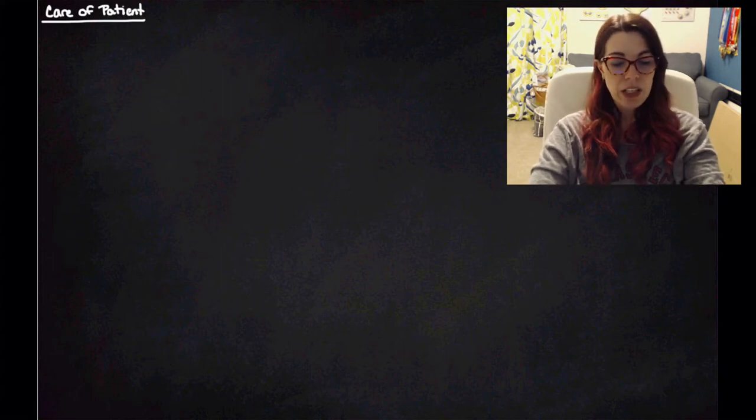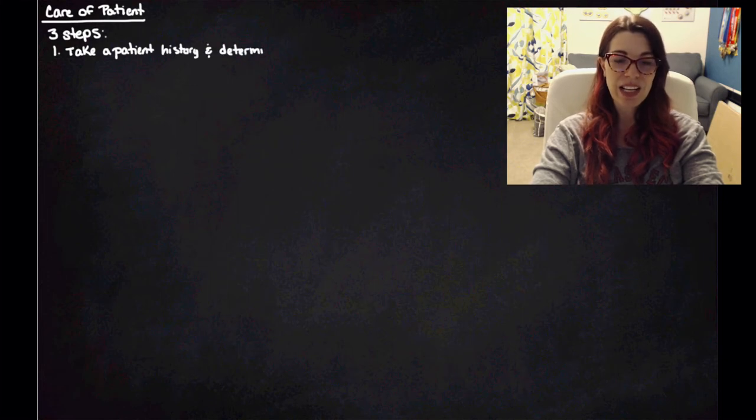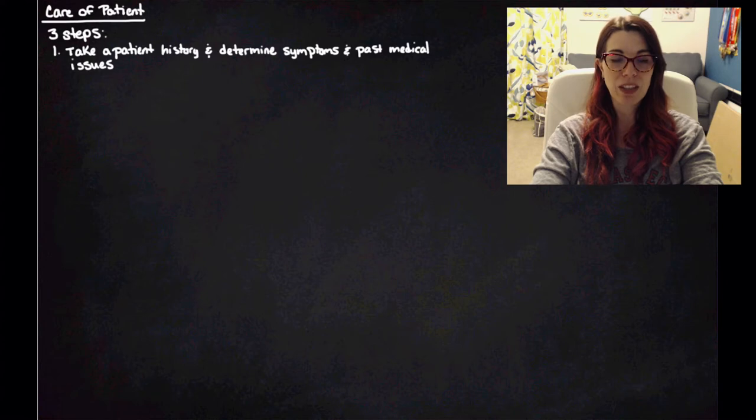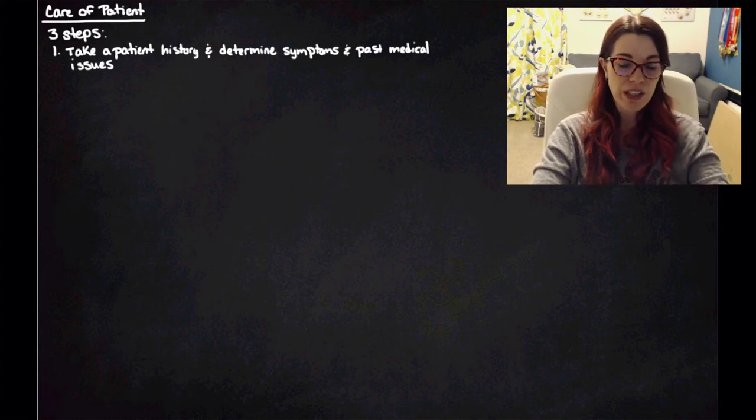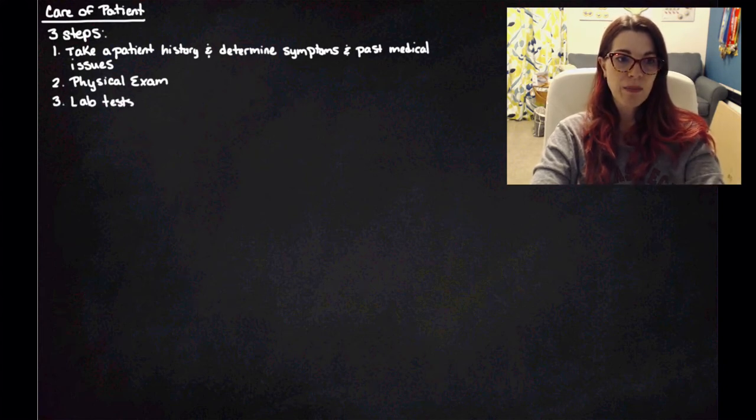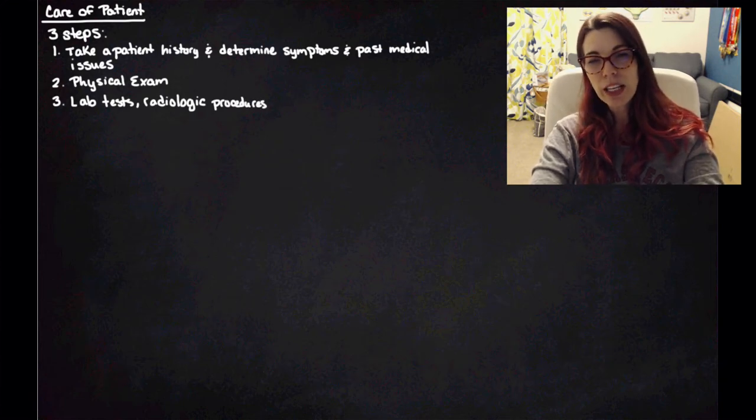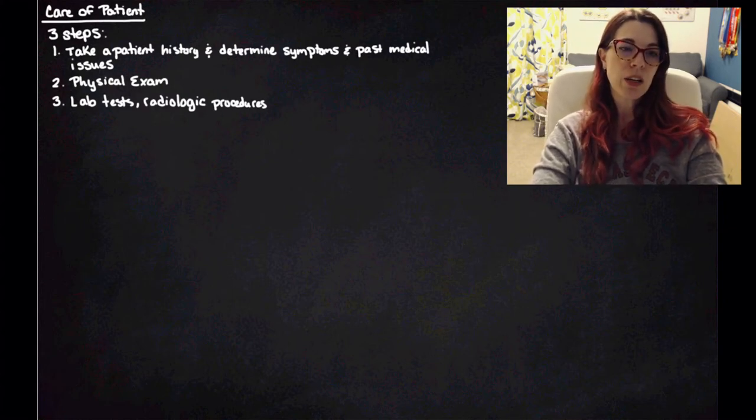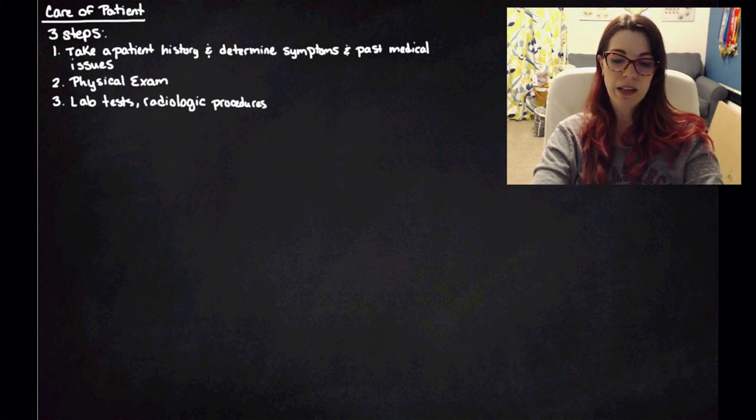Our second step is going to be care of the patient. So there are three steps within care of the patient just to make things more complicated. The first is to take the patient history and to determine the symptoms and past medical issues. So that's when you actually write down the signs and the symptoms that we just talked about. Then you're going to have a physical exam of the patient to determine any of those signs after that. You're going to have your lab tests and your radiologic procedures. Also any clinical procedures that aren't blood work tests are going to happen then. So talk to the patient, determine their symptoms, do the physical exam, write down the signs, and then order any particular tests that you need beyond the doctor's office.